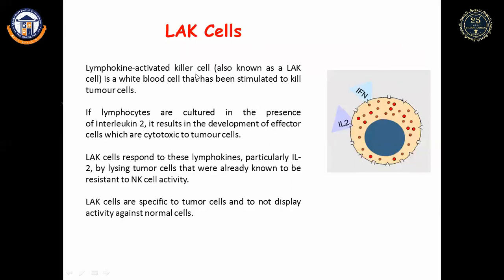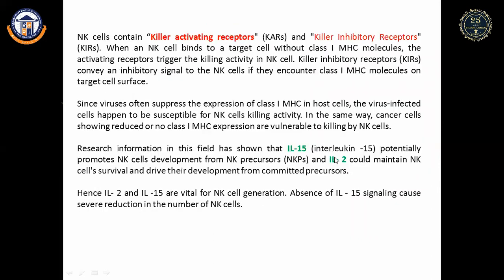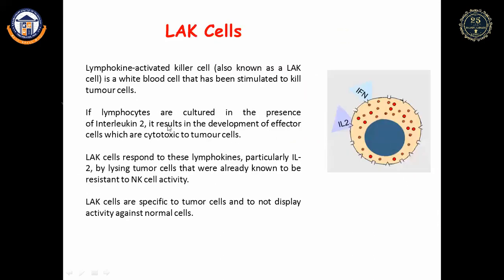Lymphokine-activated killer (LAK) cells are cytokines secreted by lymphocytes — lymphokines. They are white blood cells stimulated to kill tumor cells. If lymphocytes are cultured in the presence of interleukin-2, they develop into effector cells cytotoxic to tumor cells. LAK cells respond to interleukin-2 by lysing tumor cells but show no activity against normal cells.